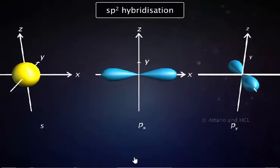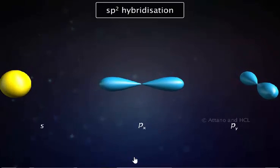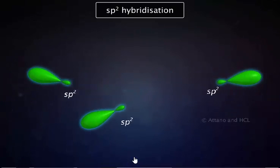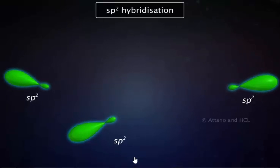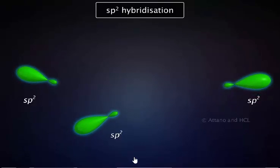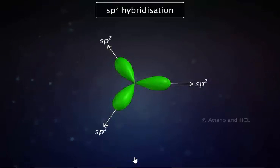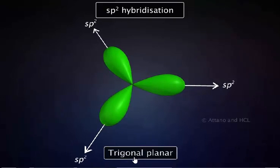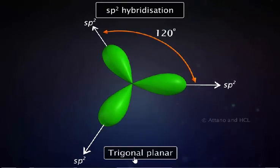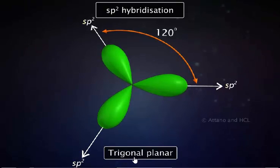The sp2 type of hybridization involves the mixing of 1s and 2p orbitals, resulting in the formation of three equivalent sp2 hybrid orbitals. Note that the number of hybrid orbitals equals the number of atomic orbitals that have hybridized. The set of three sp2 hybrid orbitals has a trigonal planar geometry. The angle between the orbitals is 120 degrees. Each sp2 hybrid orbital has 33% s character and 67% p character.